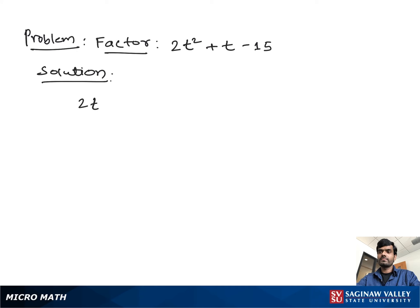Factor 2t² + t - 15. So what we do first? We multiply the coefficient of t², which is 2, with the constant -15.